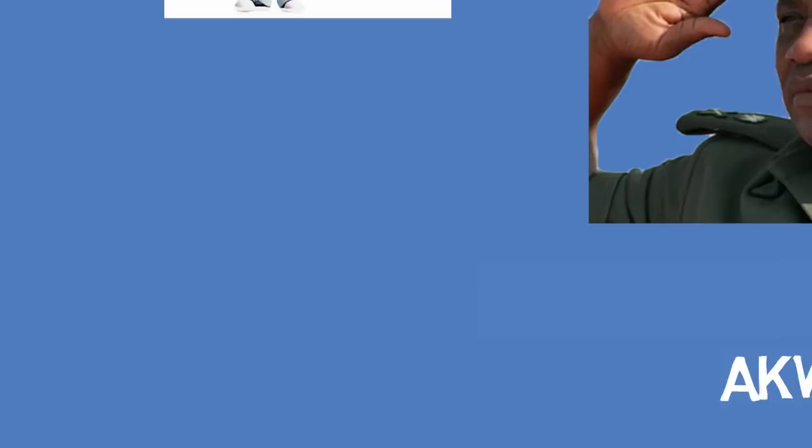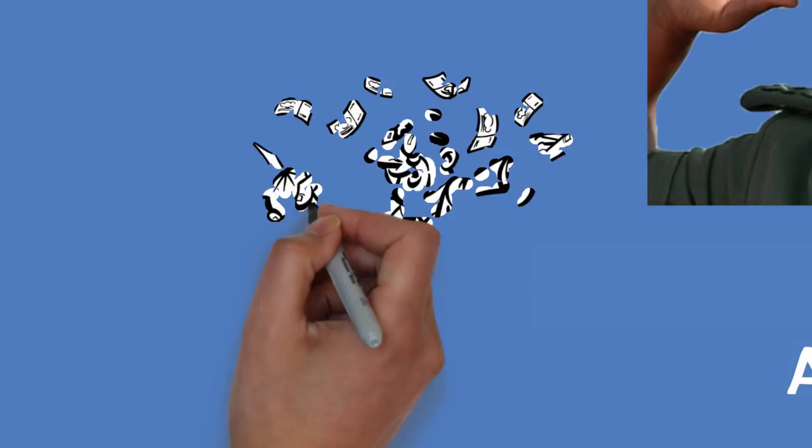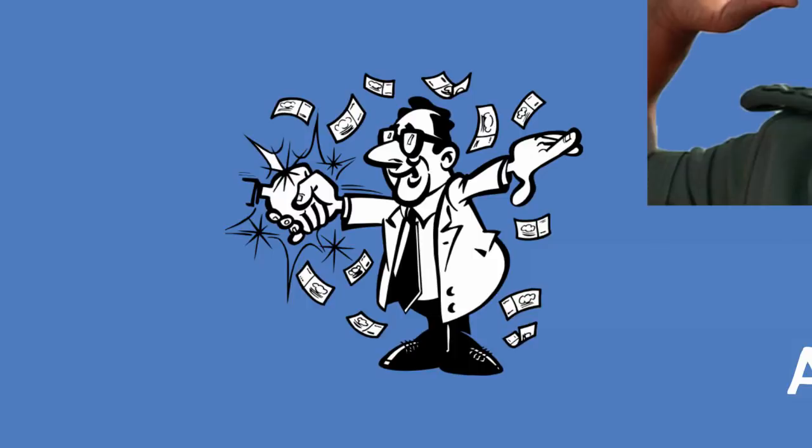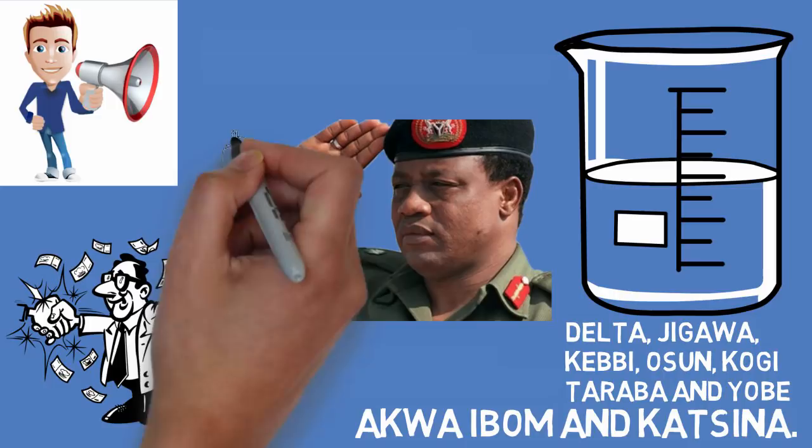Babangida also increased the share of oil royalties and rents to states of origin from 1.5% to 3%. On 12th of December 1991, President Babangida relocated the seat of the federal government from Lagos to Abuja.